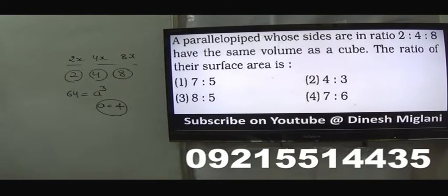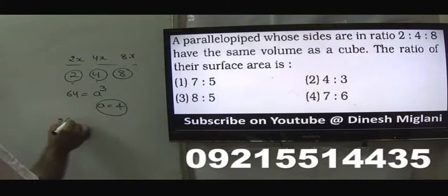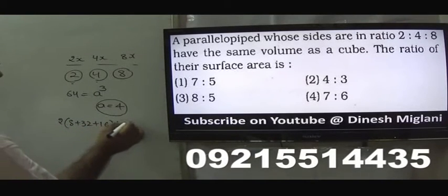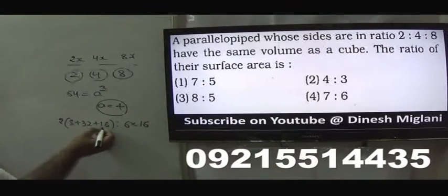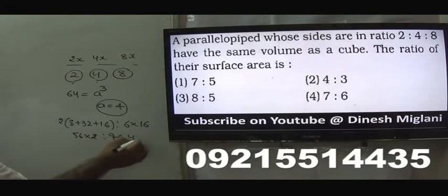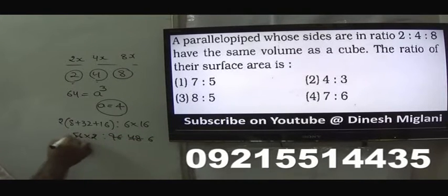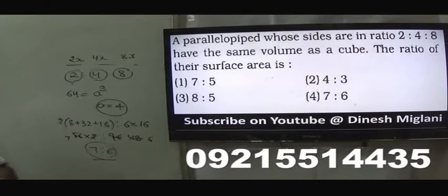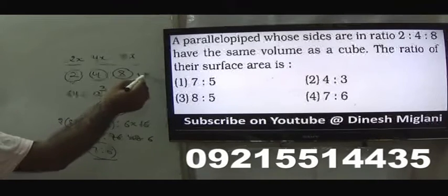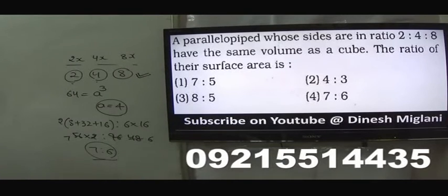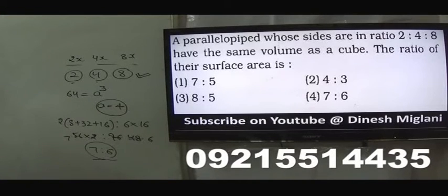Now we have to find the ratio of their surface areas. Surface area of a parallelepiped is 2 times (LB + BH + HL), and for the cube it is 6a squared. So we get 2 times (8 + 32 + 16) is to 6 times 16, which gives us 112 is to 96. Simplifying, 8 goes into both: the ratio is 7:6. The fourth option is my answer.